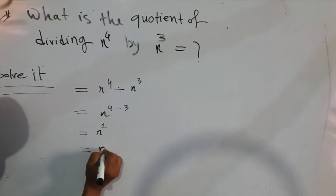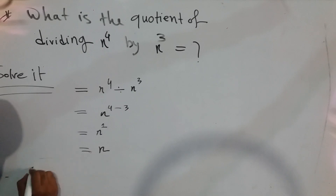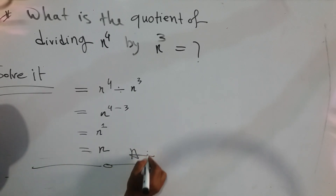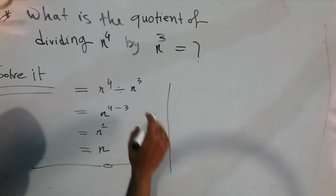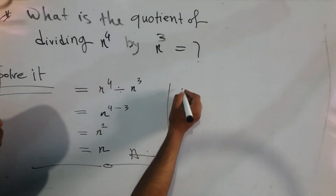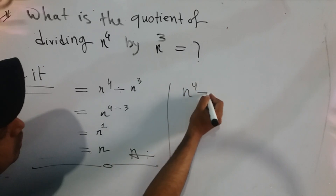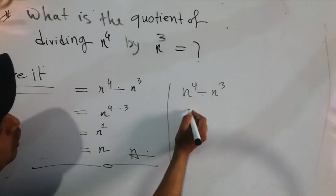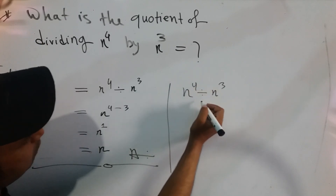x to the power 1 means x, so x is the answer. Now analyzing this point: on the right side, x to the power 4 divided by x to the power 3.